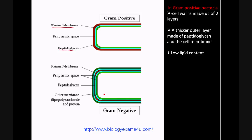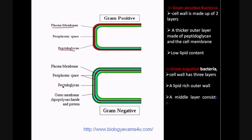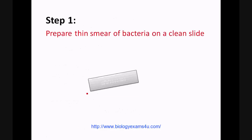But in the case of Gram negative bacteria, it has three layers. There is an outer membrane made up of lipopolysaccharides, followed by a thin layer of peptidoglycan, and then a plasma membrane. In Gram negative bacteria, the lipid content is very high.